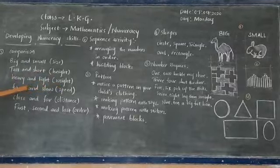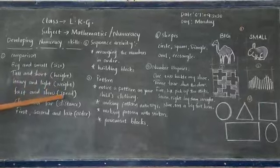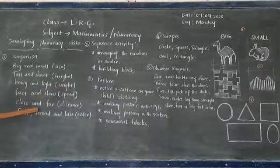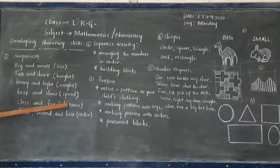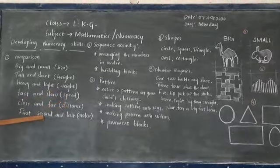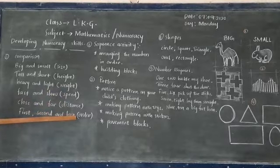Fast and slow, the sense of speed. Close and far, the sense of distance. First, second and last, the sense of order.